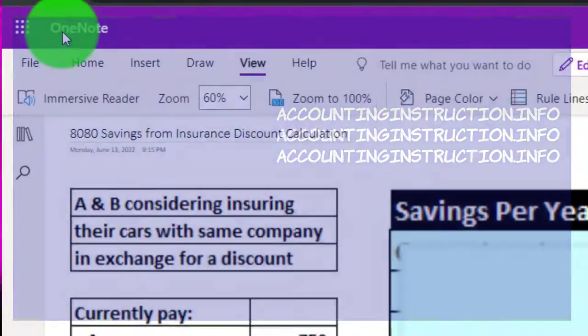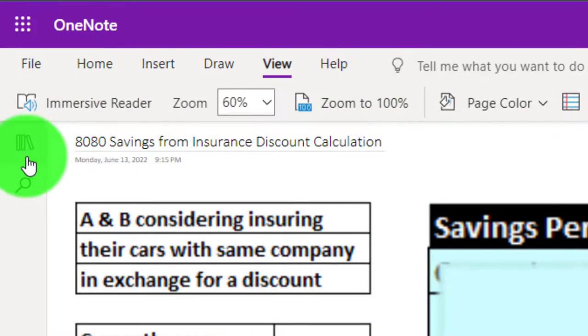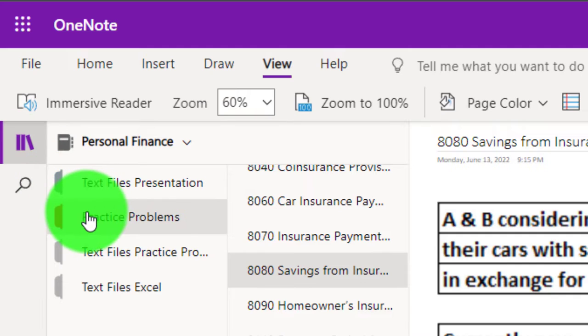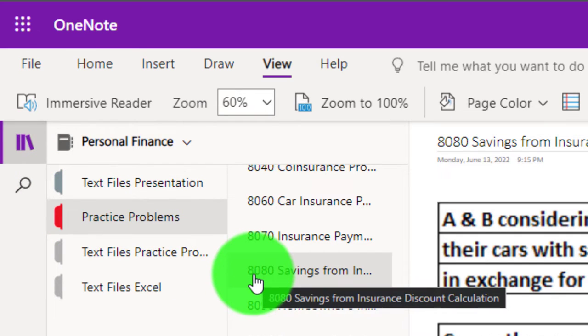You're not required to, but if you have access to OneNote and would like to follow along, we're in the icon on the left-hand side, practice problems tab in the 8080 savings from insurance discount calculation tab.